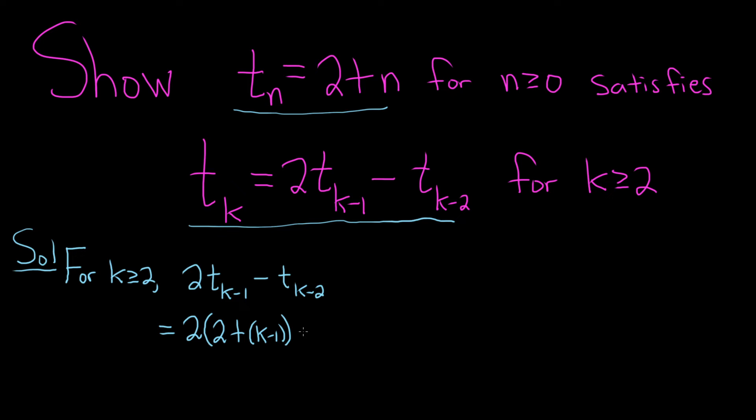And t sub k minus 2 means we replace all of the n's with k minus 2. So it'll be 2 plus k minus 2. And again, I just put the k minus 2 in parentheses for added clarity. So this piece here is your t sub k minus 2.